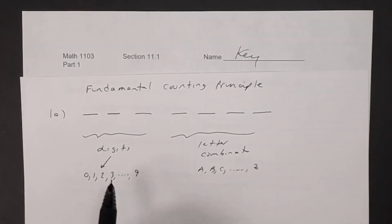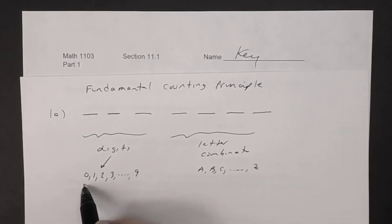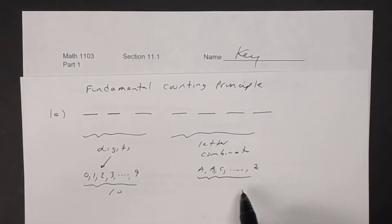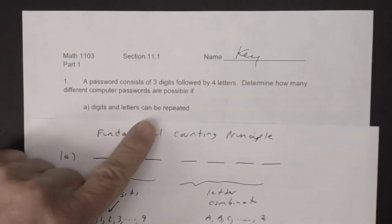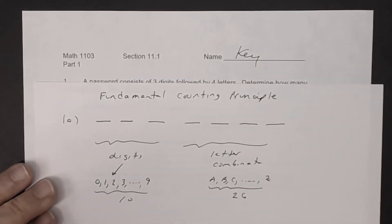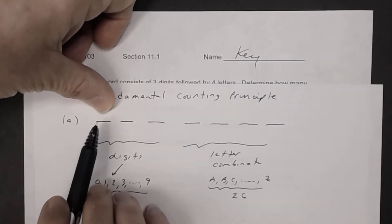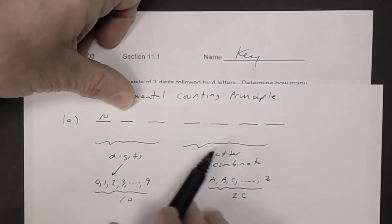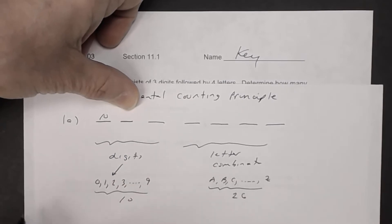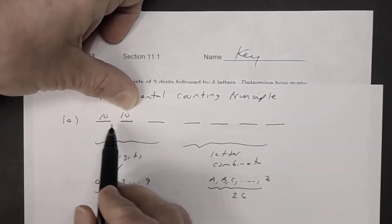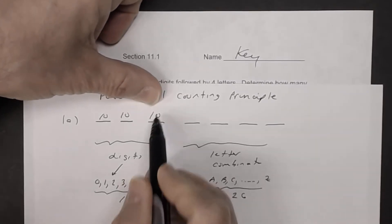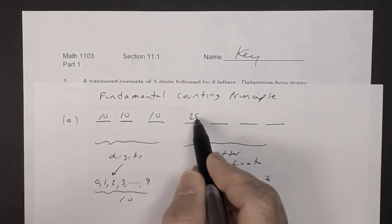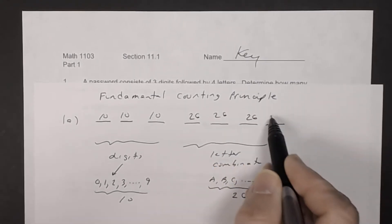There are 10 digits and 26 letters in the alphabet. Since letters can be repeated, there are 10 choices for each of the three digit positions. Since letters can also be repeated, there are 26 choices for each of the four letter positions.